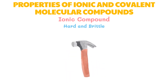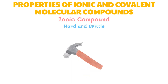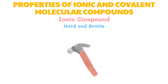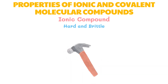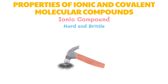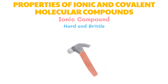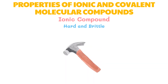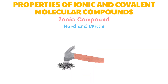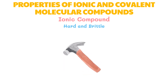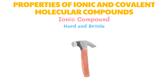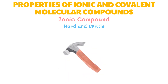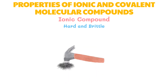Ionic compounds are hard and difficult to separate because of the strong electrostatic attraction between ions. However, ionic compounds can also be considered brittle — when pressure or a mechanical force is applied, like striking a hammer on the crystal, it causes charges to move closer together. This results in electrostatic repulsion, which is enough to split the crystals.